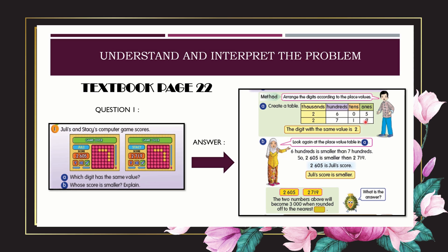Next step, we are going to compare to answer which digit has the same value. We compare thousands first. Julie's score has 2,000 and Stacy's score also has 2,000 — the digit 2 is the same. The hundreds are 600 and 700, tens are 0 and 90, ones are 5 and 9 — these differ. So the digit with the same value is 2.